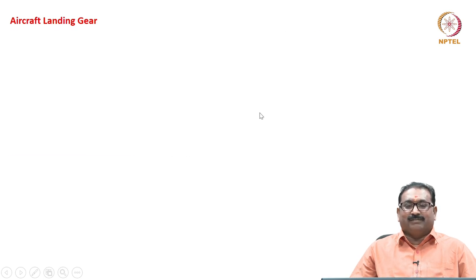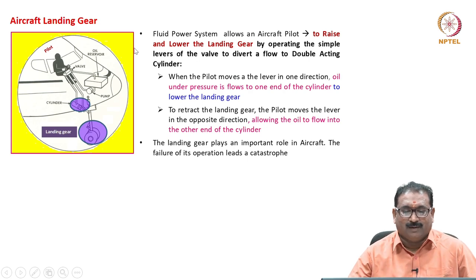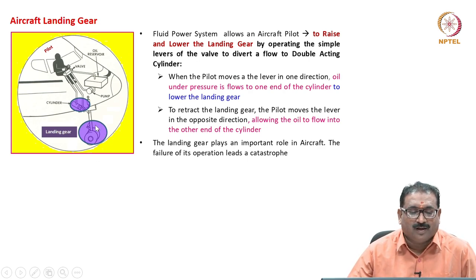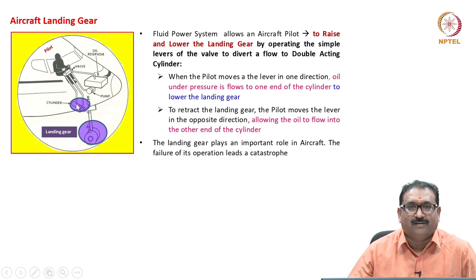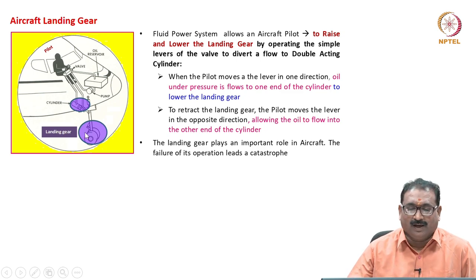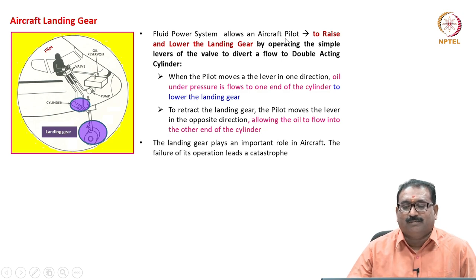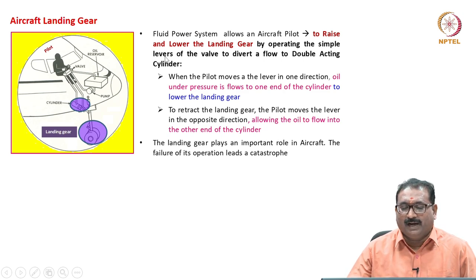Aircraft landing gear — here I am showing the pictorial views of how the landing gear will work. The pilot will move the levers to divert the flow to the double-acting cylinder to raise the landing gear up and down based on the requirement. The fluid power system allows an aircraft pilot to raise and lower the landing gear by operating simple levers of the valve to divert flow to a double-acting cylinder.